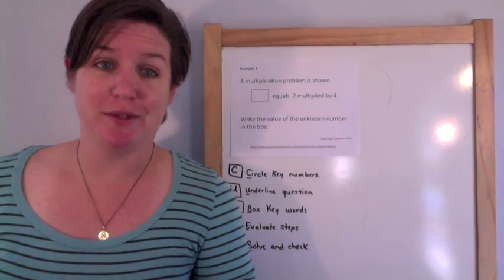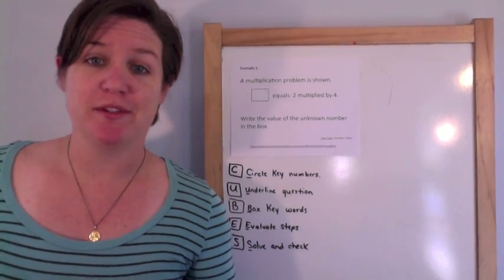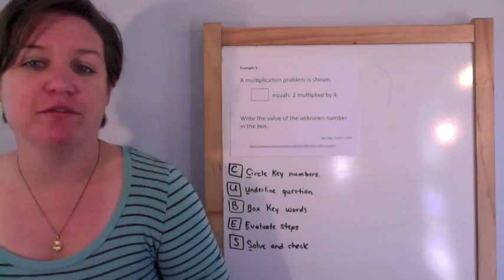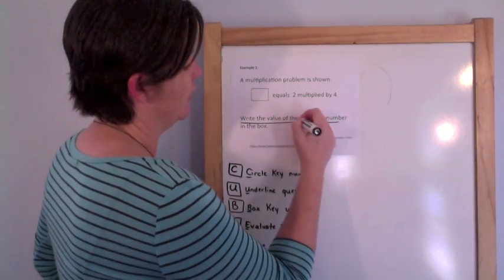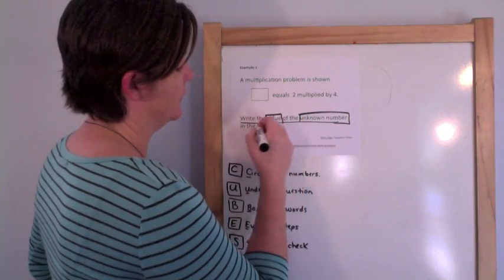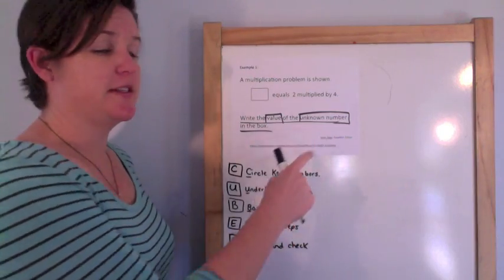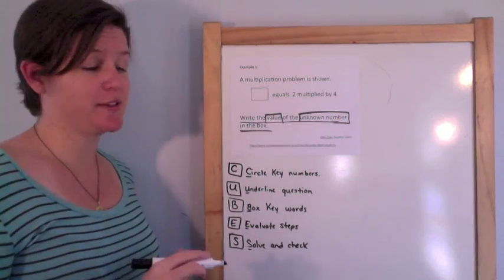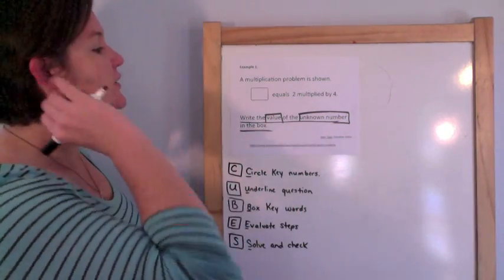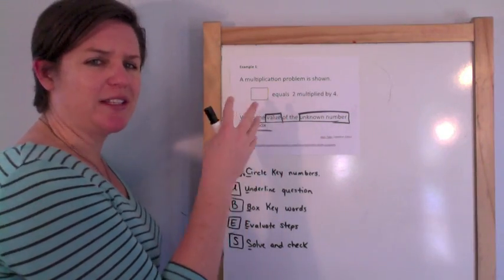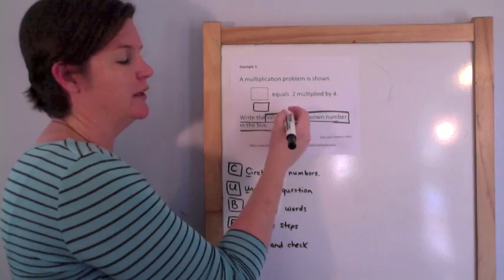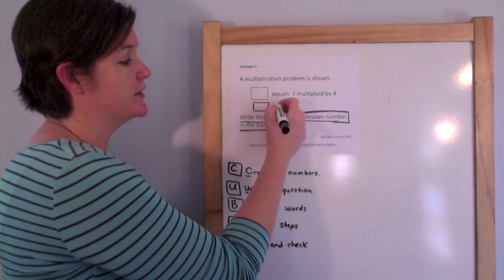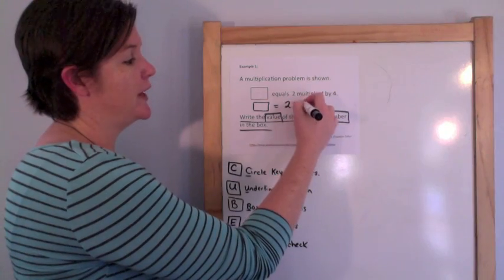This one shouldn't be that difficult. Let's read it: a multiplication problem is shown. Box equals 2 multiplied by 4. Write the value of the unknown number in the box. This is an equation editor and my answer needs to go into this box. A lot of kids would get tricked because this problem uses words. What I like to do is bring down the equation and break it into numbers and symbols. So box, my unknown, equals 2 multiplied by 4.